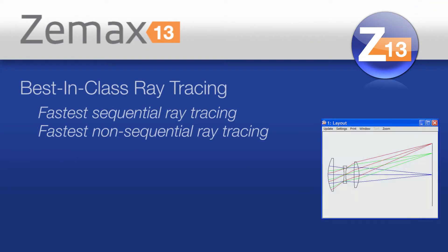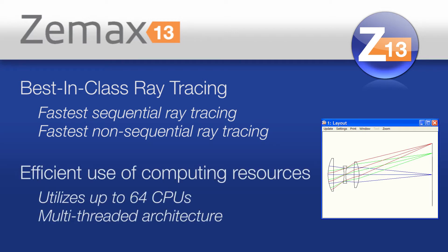Underpinning all of that is the best-in-class ray tracing capabilities we have, in which we can split ray tracing calculations up over all the CPUs on your machine and put the calculations back together again — completely invisible to you — so that we get the maximum use out of however many cores your computer has.